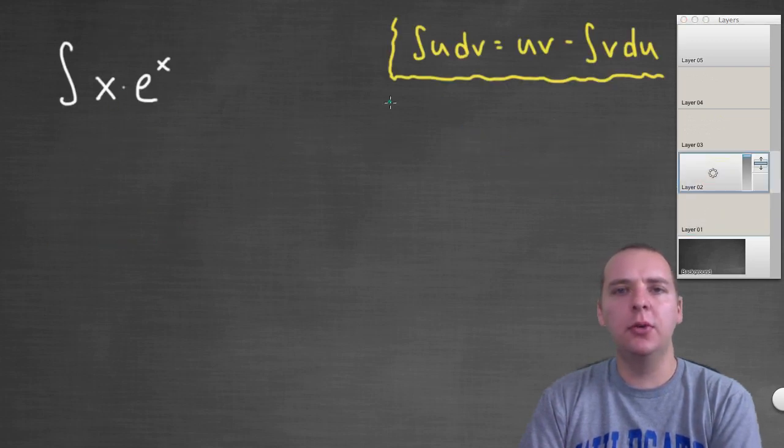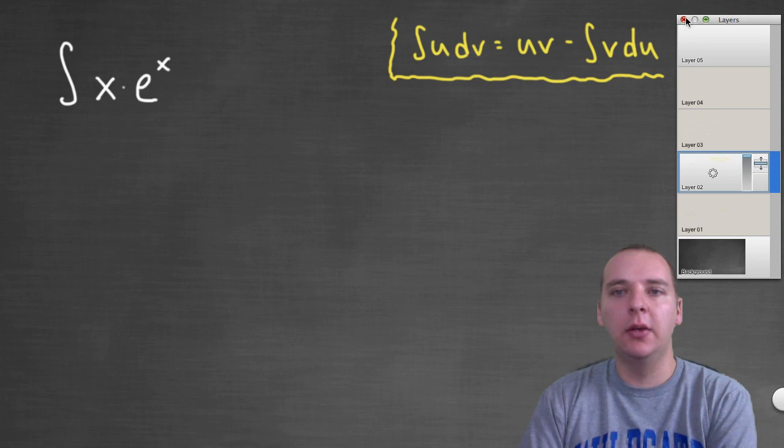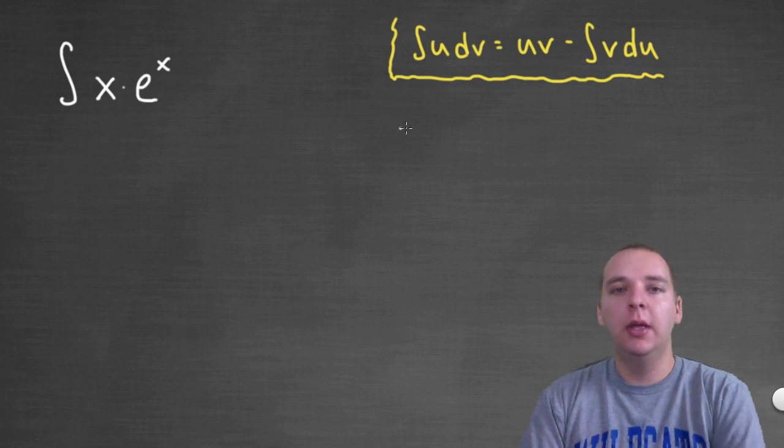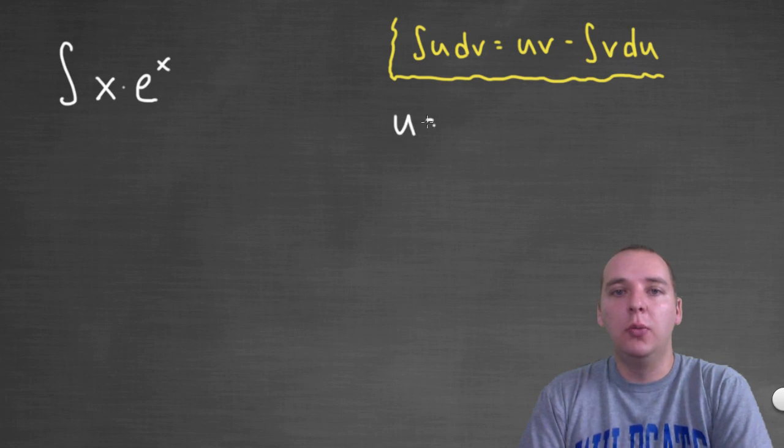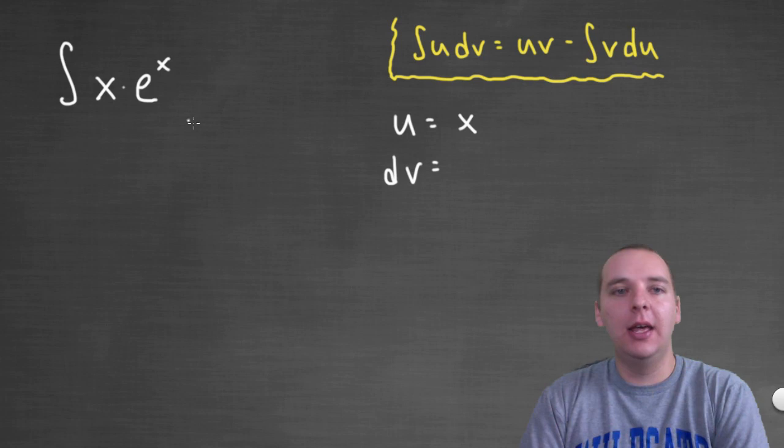So I see a product here, that's what makes me think integration by parts. Here's our integral and here up in the corner just a reminder of what integration by parts was. For this particular example I'm going to go ahead and just tell you who's who. I know your natural question would be, well, how do you know which one's u and which one's dv? We'll get into that later in the video. But just go with me for a minute. I'm going to let u be x and I'm going to let dv be the e to the x.